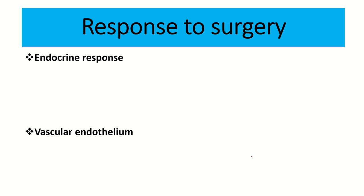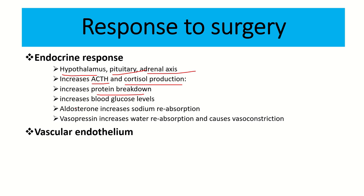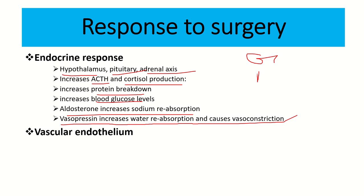Important endocrine and vascular responses also occur due to the metabolic response to injury. From the hypothalamus-pituitary-adrenal axis, different hormones are released. Adrenocorticotropic hormone and cortisol production increase, increasing protein breakdown and blood glucose levels. Aldosterone increases, causing sodium reabsorption. Vasopressin increases, causing water reabsorption and vasoconstriction. As a result, blood glucose level, blood amino acid level, blood fatty acid level, blood sodium, and water content all increase.